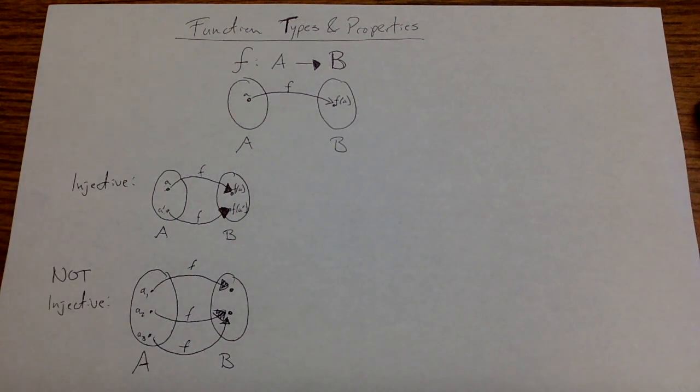When a function is not injective, it fails to have this property. That means that there are two distinct elements that are mapped to the same output. For instance, in this example, I have a2 and a3 are distinct inputs, distinct elements of the domain, and they are sent to the same output.